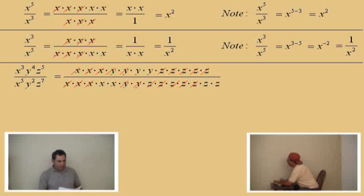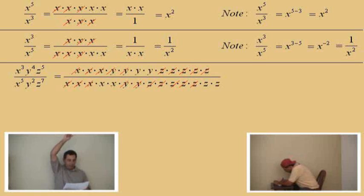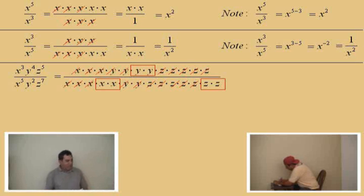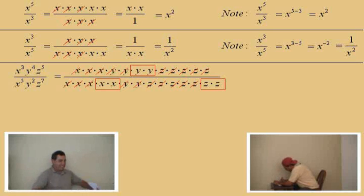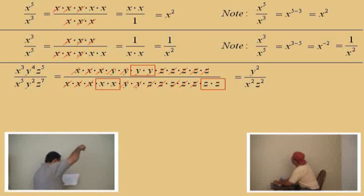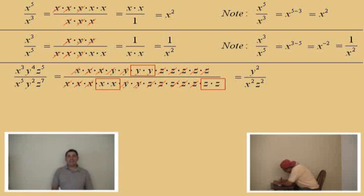So there we see it. We have two y's on top, two x's on the bottom, and two z's on the bottom. So, Charlie, how do we write y times y? Y squared. How do we write x times x? X squared. And how do we write z times z? Z squared. Very nice, Charlie. So we're going to write our final answer: y squared over x squared times z squared.